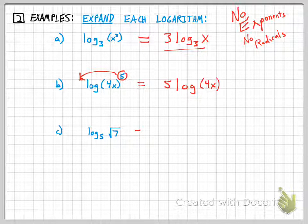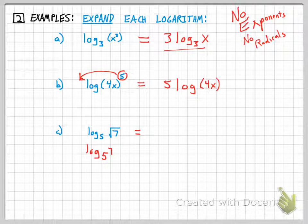You may want to think about that radical as a power, so it's really log base 5 of 7 to the one-half power. So when I rewrite that expression, the one-half comes out in front and you have the log base 5 of 7.